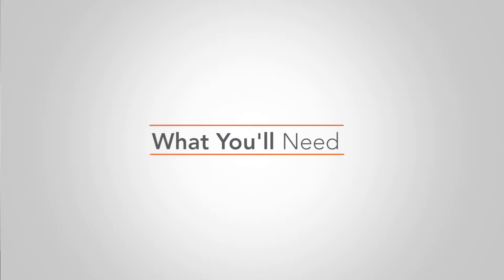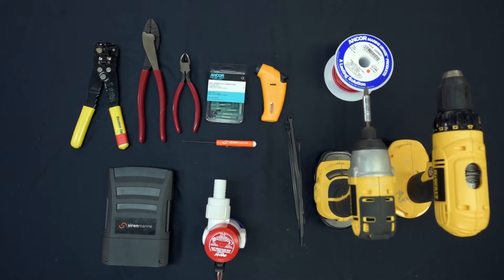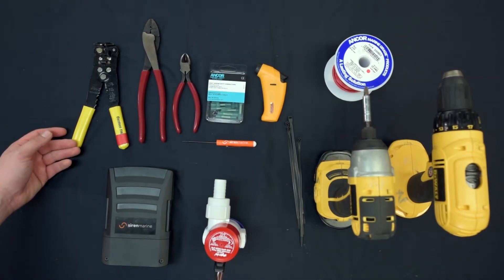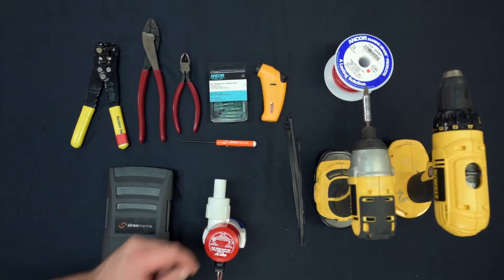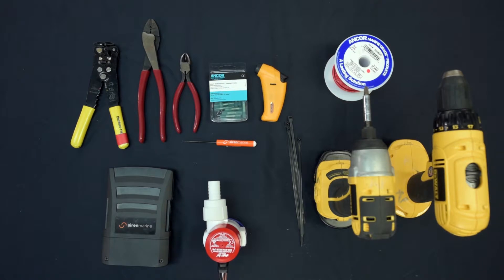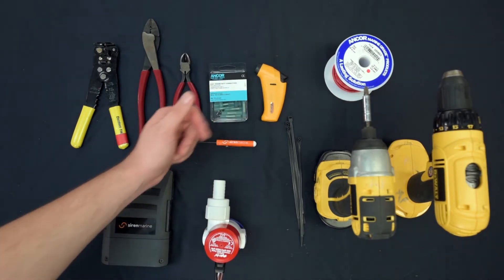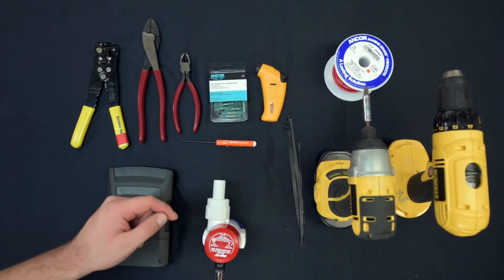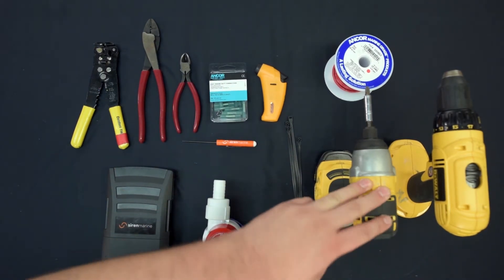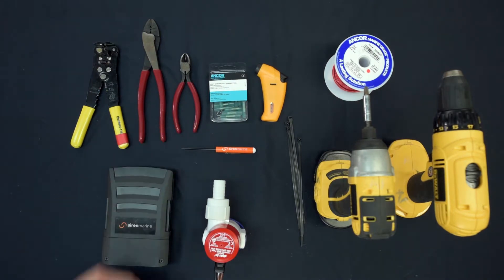Here in front of me I have the tools necessary to get this done today. I have our pair of wire strippers, pair of crimps, dykes, some butt connectors and some positive wire in case I need to extend my wire run or my positive splice off the bilge itself. I have a torch to melt down those butt connectors, some zip ties to neaten up the installation, my drill and my handy Siren Marine screwdriver for the terminal strip.